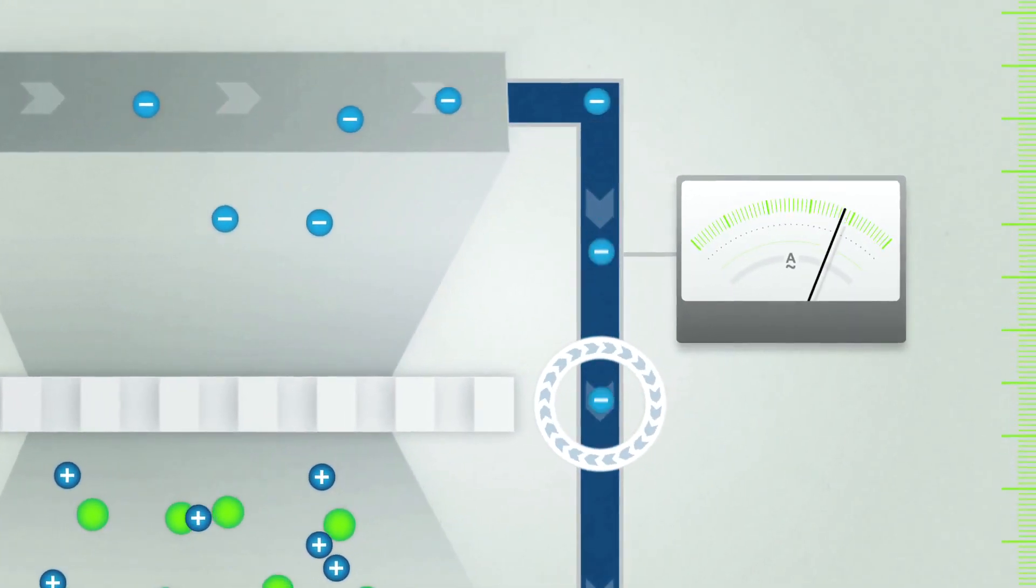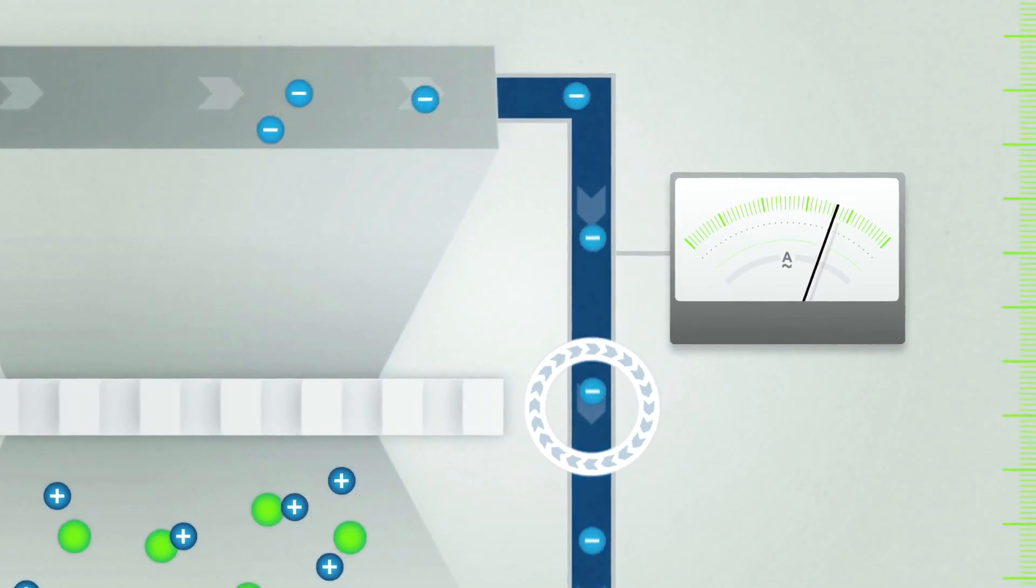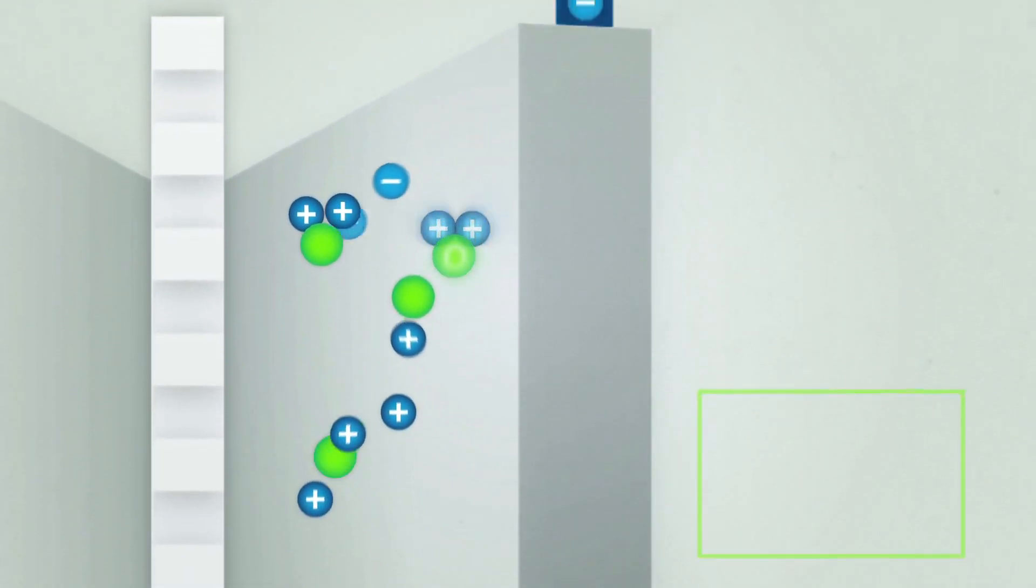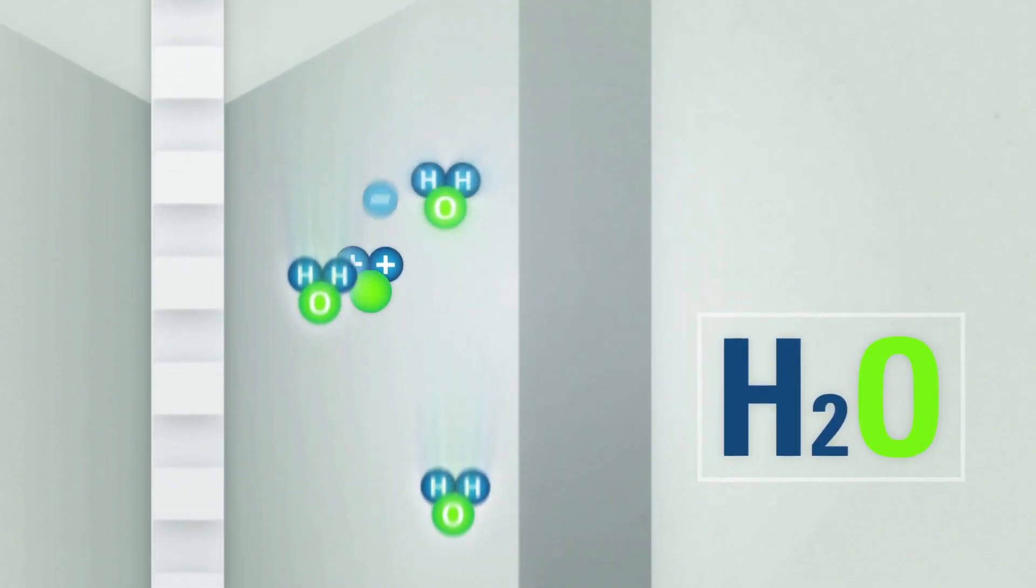The end products from the chemical reaction are power for the drivetrain and H2O, that is, pure water. This is the only emission produced by this mini power station.